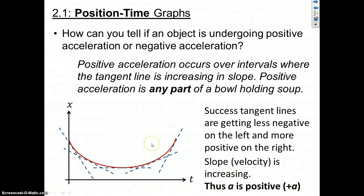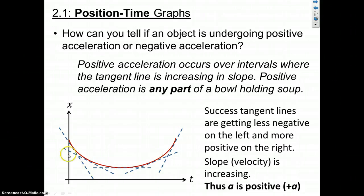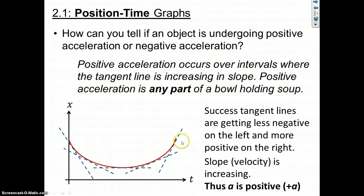Here's how you remember: when we have a bowl that can hold soup, that's positive acceleration - we like soup. So positive acceleration looks like a bowl shape. It doesn't have to make the whole bowl for acceleration to be positive. On the other hand, if we have an upside-down bowl - dumping the soup out - that's sad and negative, so that's negative acceleration. You could also think of it as a smiley face for positive acceleration and a sad face for negative acceleration.